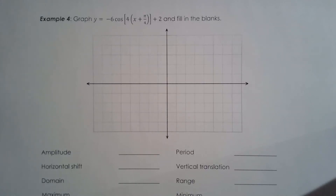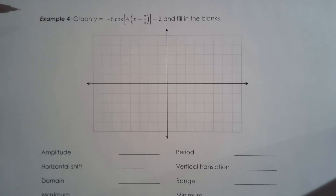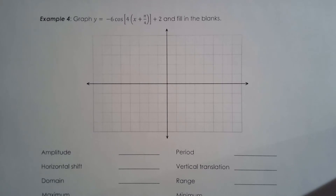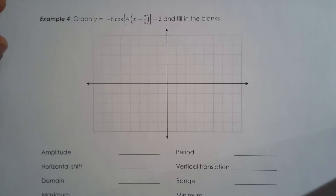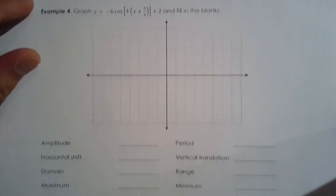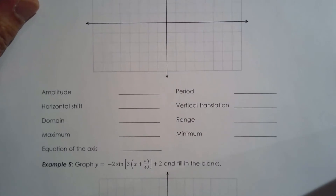Now we're going to put everything together and try to graph the transformed cosine function for example four and the transformed sine function for example five. We're going to fill in the properties of the trig function below before we go ahead and generate the graph.